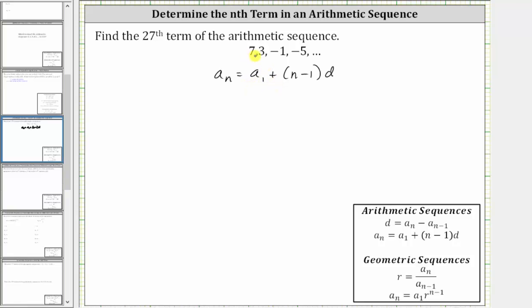A sub one is the first term, and therefore a sub one is seven. D is the common difference, or the value that we are adding each time to determine the terms in the sequence. Notice how the terms are decreasing by four, and therefore we are subtracting four, or adding negative four each time. The common difference d is negative four.